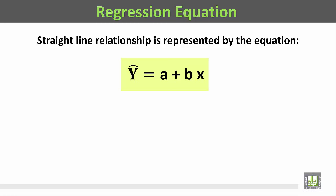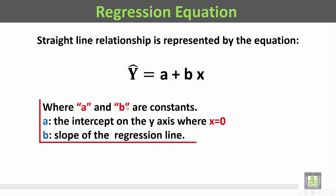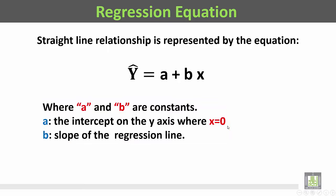Y-hat represents the expected or predicted value of the dependent variable. X represents the independent variable. A is equal to the intercept — the point on the y-axis where x is equal to zero. B is the slope of the regression line, where a and b are constants.